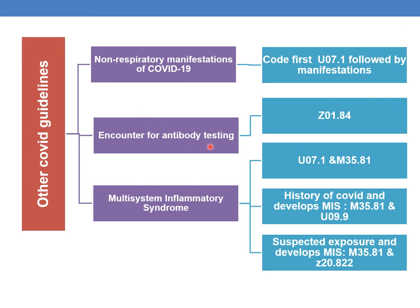The code for encounter for antibody testing is Z01.84. Whenever the patient develops a multi-system inflammatory syndrome as a result of COVID, the respective codes are as follows: if the patient has active COVID infection and develops multi-system inflammatory syndrome, assign U07.1 and M35.81. If the patient has a history of COVID and develops multi-system inflammatory syndrome, assign M35.81 and U09.9. For suspected exposure that leads to MIS, code M35.81 and Z20.822.